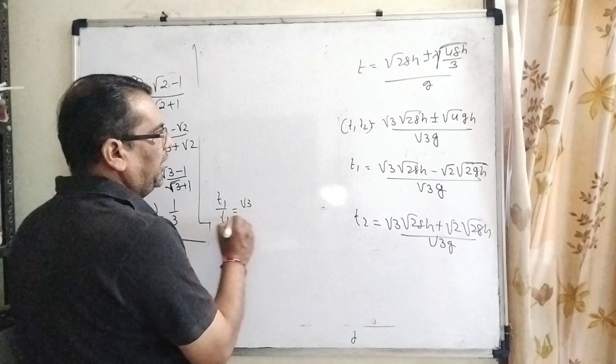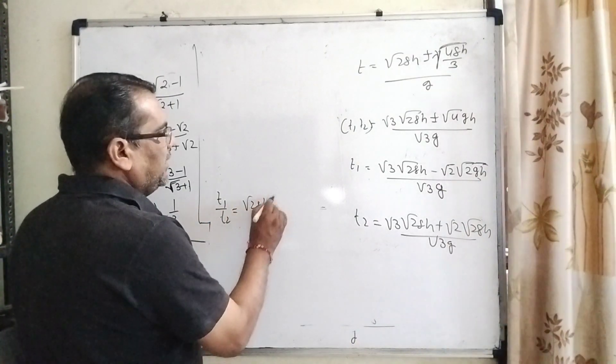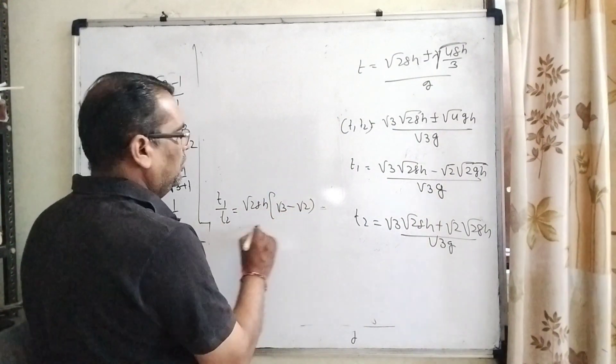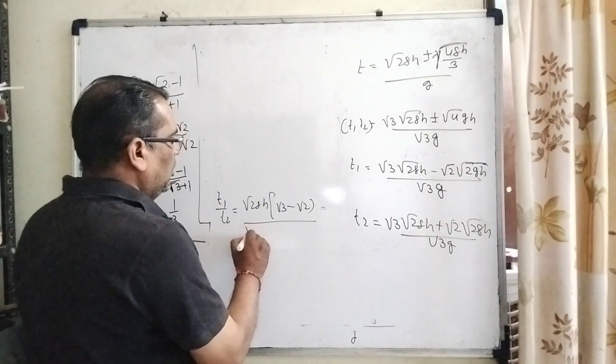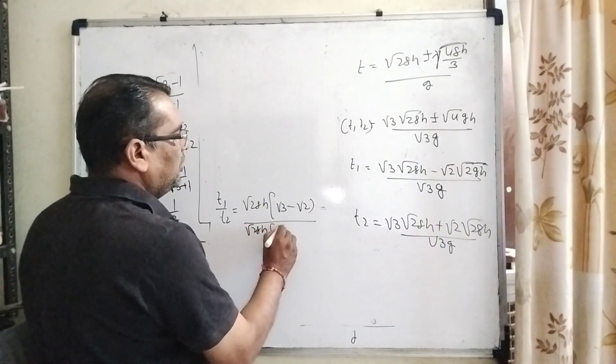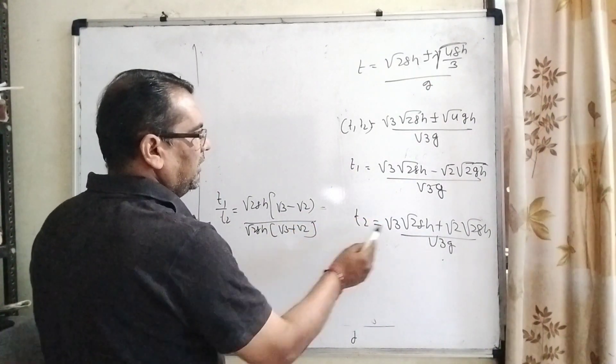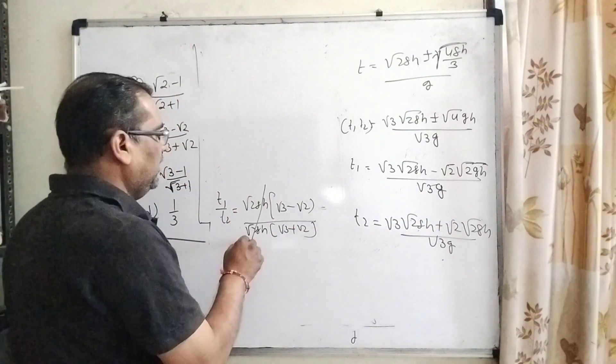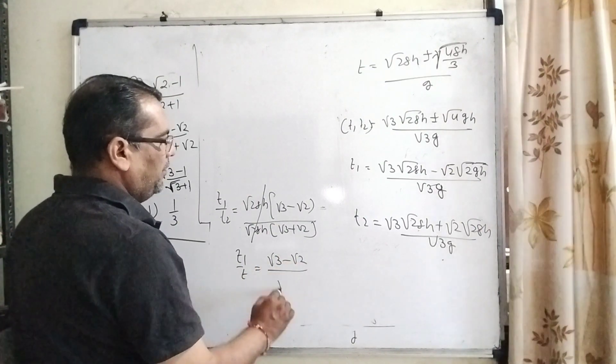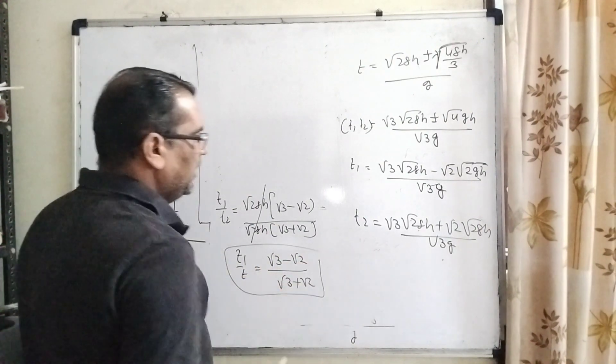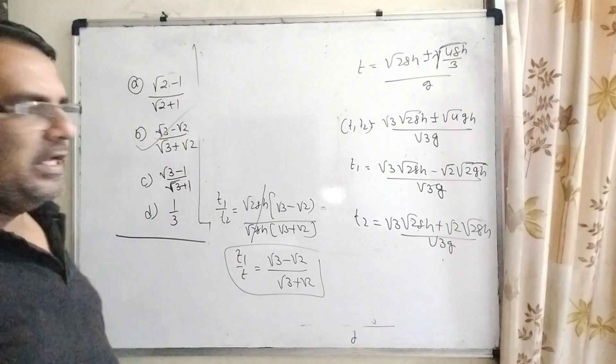Now t1/t2 = [√(2gh)(√3 - √2)] / [√(2gh)(√3 + √2)]. The √(2gh) cancels out, giving t1/t2 = (√3 - √2)/(√3 + √2). This matches option B, which is the correct answer.